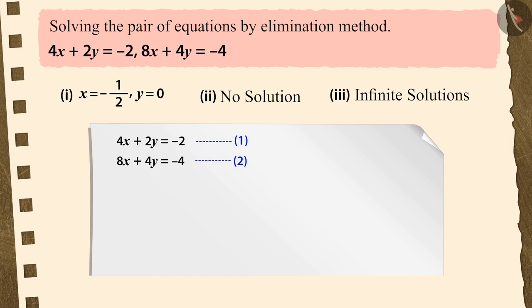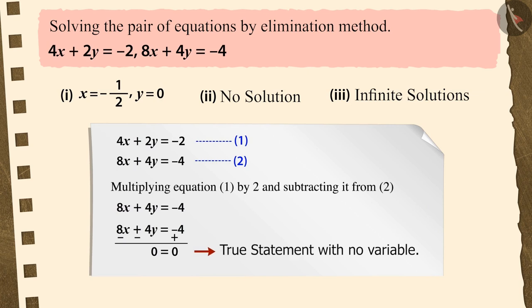In the given pair of linear equations, in order to eliminate one variable, when we multiply equation 1 by 2 and subtract it from equation 2, we get an equation with no variable.